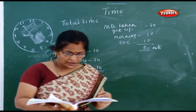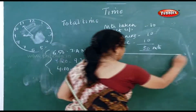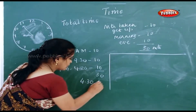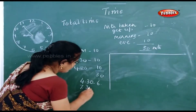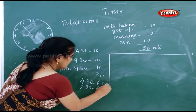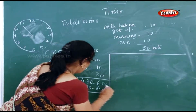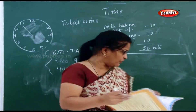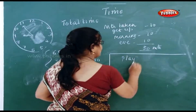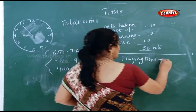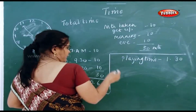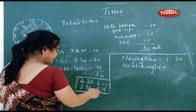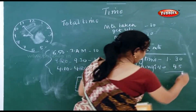Next question: find the time taken for playing and watching TV. Playing games was from 4:30 to 6 o'clock, and watching TV was from 7:30 to 8:15. Playing time is 1 hour and 30 minutes. Watching TV time is 45 minutes.